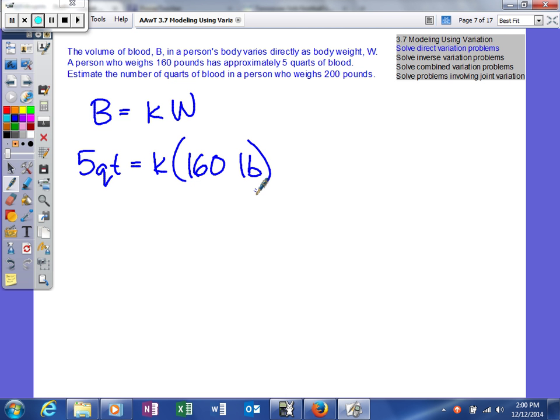Alright, so we're going to solve for k. We divide both sides by 160, so we get k equals 5 quarts over 160 pounds. We can simplify that to 1 over 32 quarts per pound.